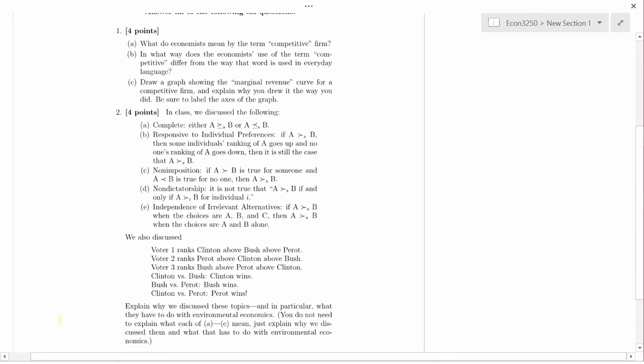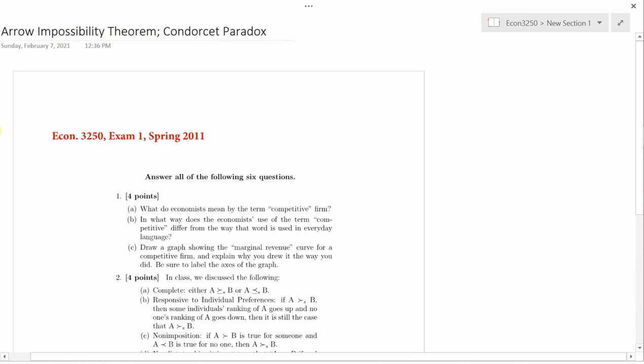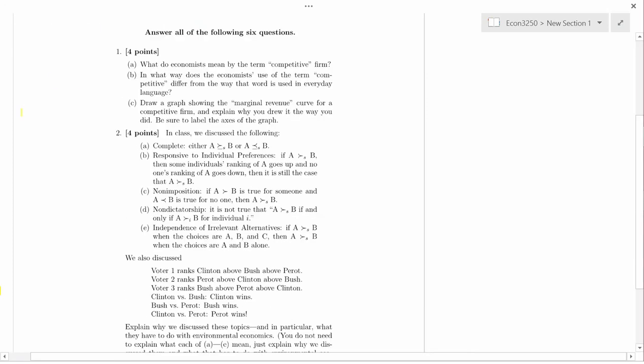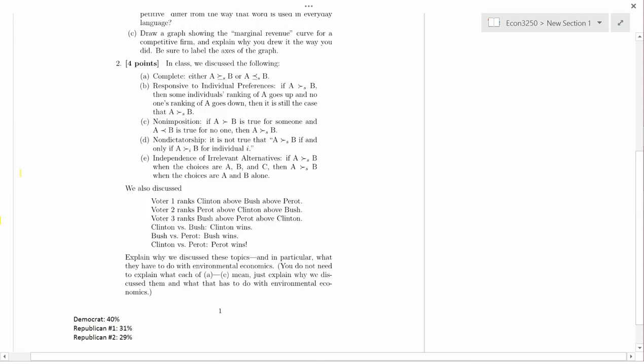What I have on the screen now is an excerpt from Exam 1 of Spring 2011. You can see up above on the upper left that the title is The Arrow Impossibility Theorem and the Condorcet Paradox. So that's what we're going to start talking about. The reason I'm pulling up the old exam is because I have things typed out for the exam question. So it's question number two that's relevant here.